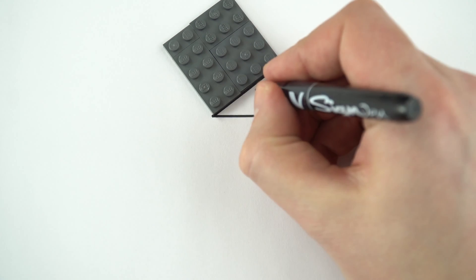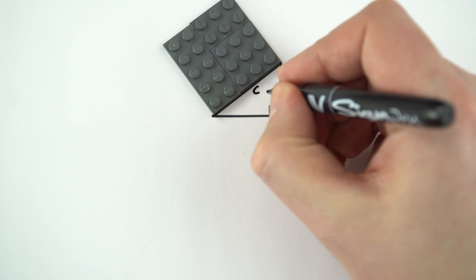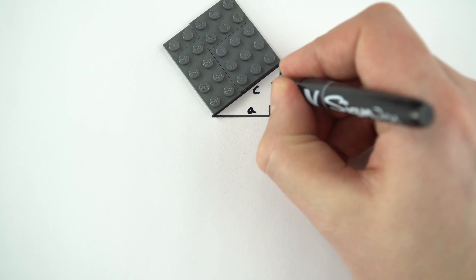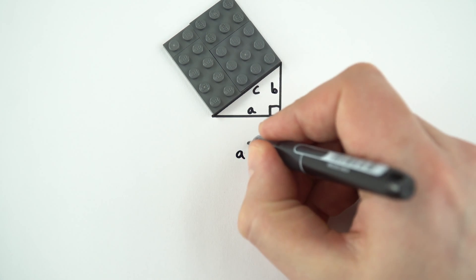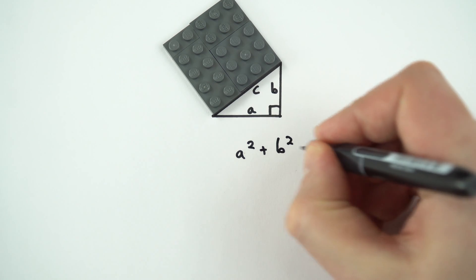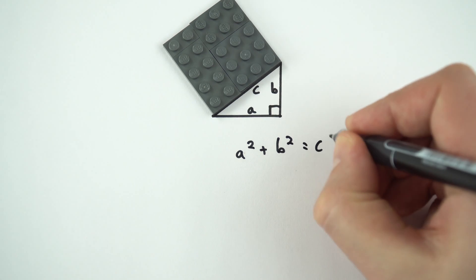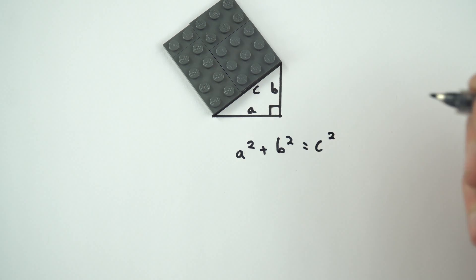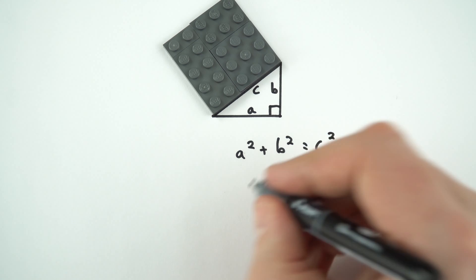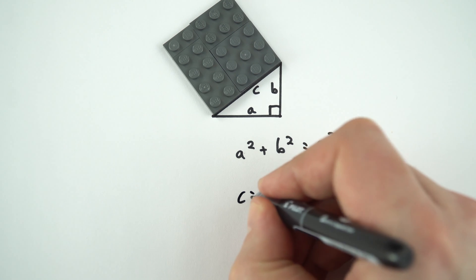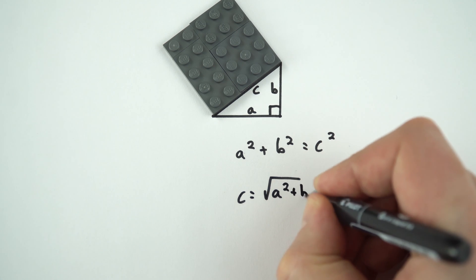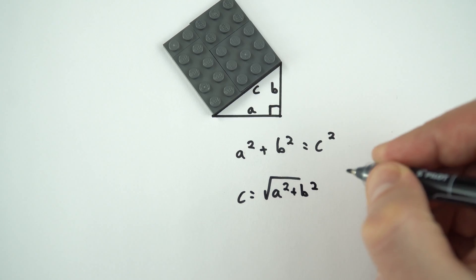Now by convention we write the longest side as c, this is a and this is b, and what we can then say is that a squared plus b squared is equal to c squared. Or alternatively, if you want to know the length of side c, this is just going to be the square root of a squared plus b squared.